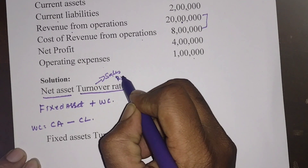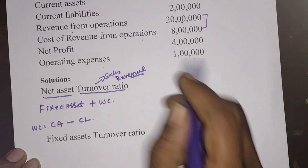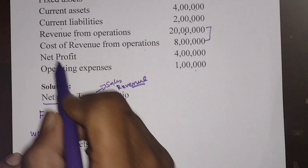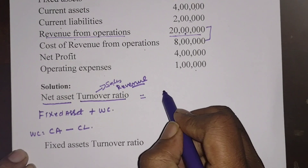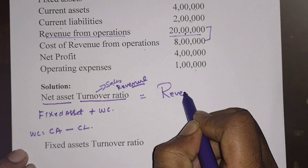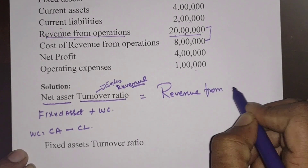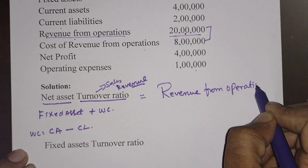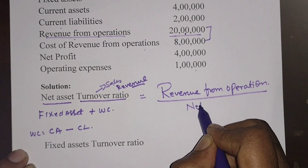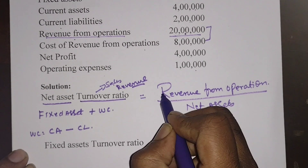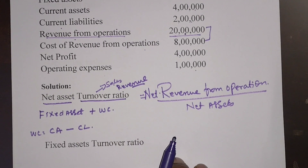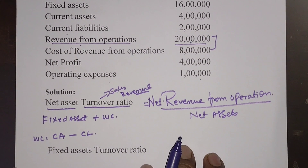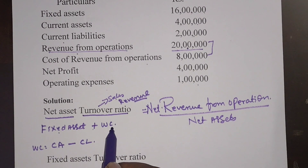Turnover means sales, and sales is also called revenue. Revenue from operations in this problem is 20 lakhs. The formula is: revenue from operations divided by net assets. Net revenue can also mean sales minus sales return. The sub-formula for net assets is fixed assets plus working capital.